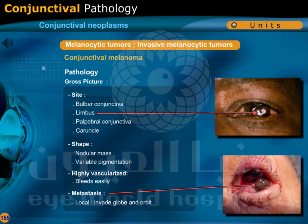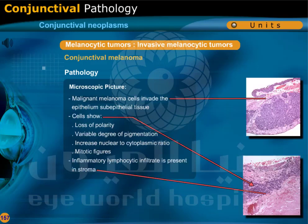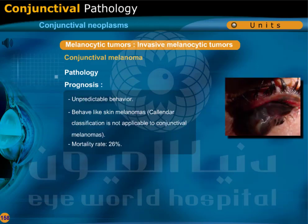Conjunctival melanoma may affect the bulbar conjunctiva, limbus, palpebral conjunctiva, or caruncle, appearing as a nodular mass with variable pigmentation and is highly vascularized, bleeding easily. Metastases can occur locally, invading the globe and orbit. Lymphatic spread is common to the preauricular and intraparotid nodes and is associated with poor prognosis. Risk factors for metastases include large tumor size, multicentricity, epithelioid cell type, and lymphatic invasion. Microscopically, malignant melanoma cells invade the epithelium and subepithelial tissue, showing loss of polarity, variable degree of pigmentation, increased nuclear to cytoplasmic ratio, and mitotic figures. Inflammatory lymphocytic infiltrate is present in the stroma. Conjunctival melanoma has an unpredictable behavior; the mortality rate is 26%.